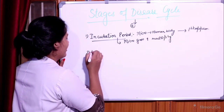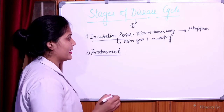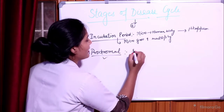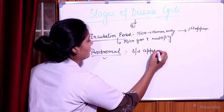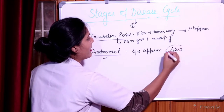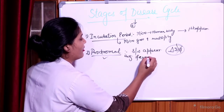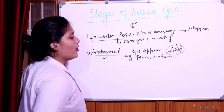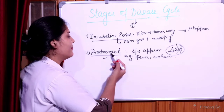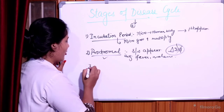The second stage is prodromal stage. In prodromal stage, the signs and symptoms are appearing, but we cannot able to diagnose — a proper diagnosis cannot be made. For example, the signs and symptoms of fever, malaise, headache appear in most disease conditions. So the signs and symptoms are appearing, but the diagnosis cannot be made. That is the second stage, prodromal.